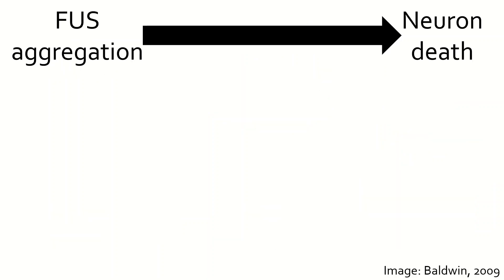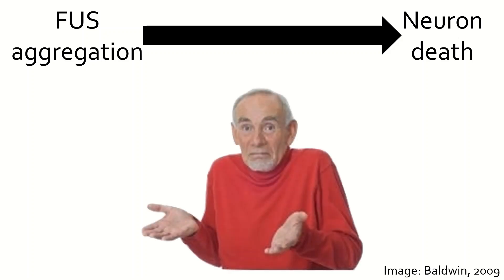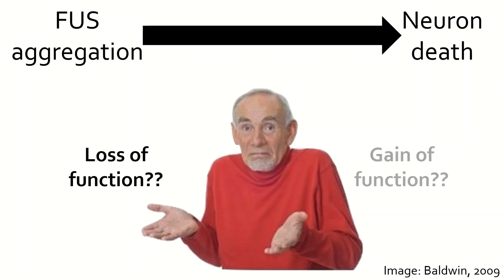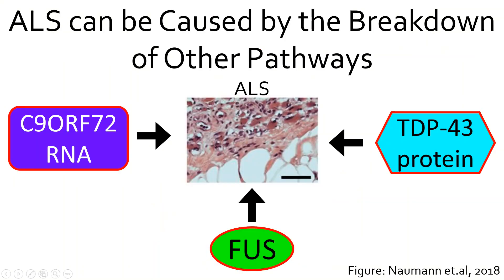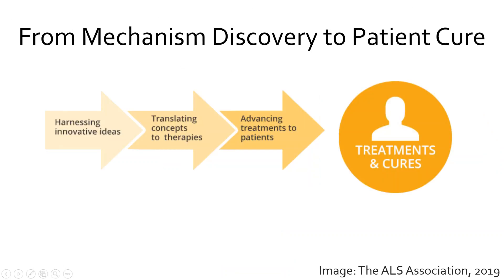Much research still remains to be conducted in this field. While FUS has been linked to ALS, scientists are still not completely sure on exactly how FUS aggregates within the cell, with insufficient evidence to prove whether it is a loss of function in the nucleus, gain of function in the cytoplasm, or a combination of both that leads to neuron death. Additionally, there may be multiple causes for ALS. Other molecules, including proteins such as TDP-43 or RNAs such as C9-ORF72, have also been linked to patients with ALS, thus producing their own disease mechanism pathways. If we are able to come up with a cure for ALS and other neurodegenerative diseases, it will be done by research that helps us to elucidate what is happening in the cell at the most basic molecular levels of biochemistry.